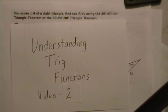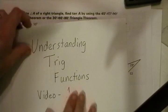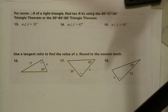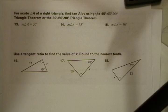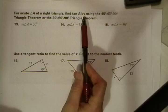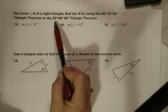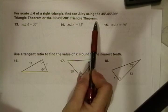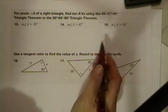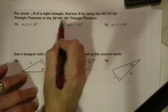And also, we're going to prove that the trig functions work on our special triangles, the 45s and the 30-60-90s. We're also going to work on reading the directions. For acute angle A of a right triangle, find tangent A by using the 45-45-90 triangle theorem or the 30-60-90 triangle theorem. For this first one, we're told to use a 30-degree angle, so that goes with our 30-60-90 triangle theorem.